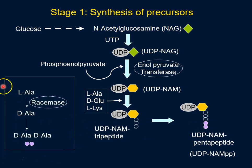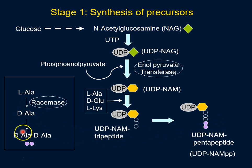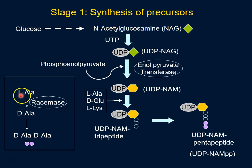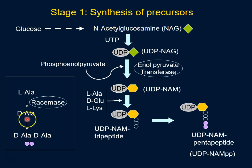Bacteria has L-alanine available to it — it will simply convert that L-alanine to D-alanine, and then it will conjugate two molecules of D-alanine to get this dipeptide, which it will use to attach to the already-present tripeptide to give the pentapeptide — five amino acids attached to NAM.